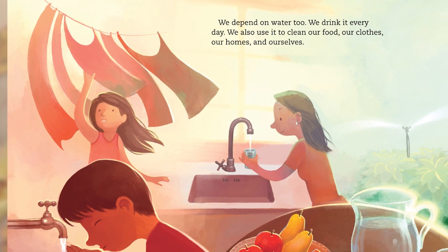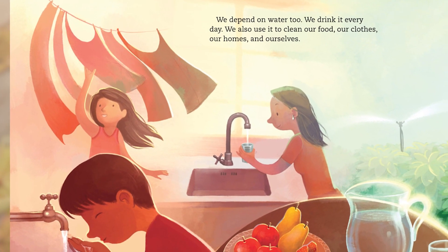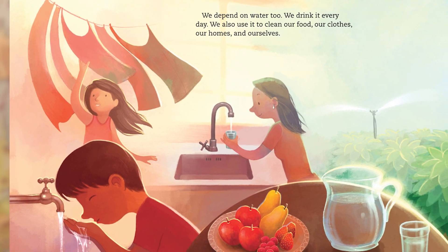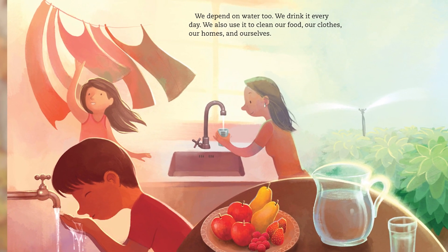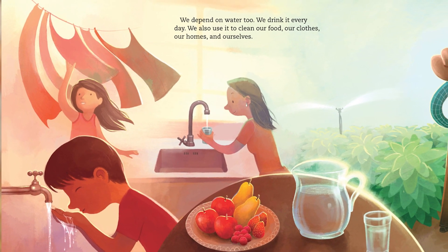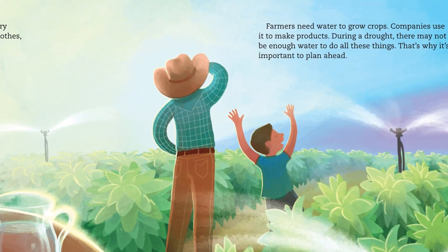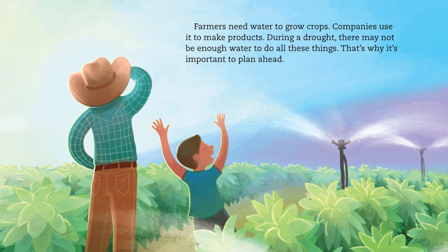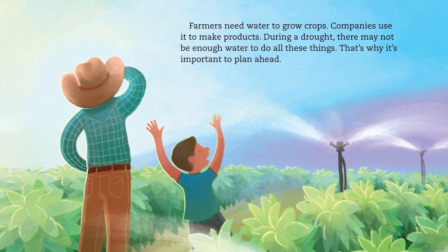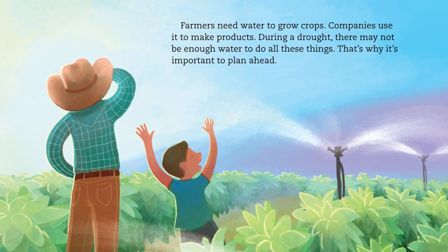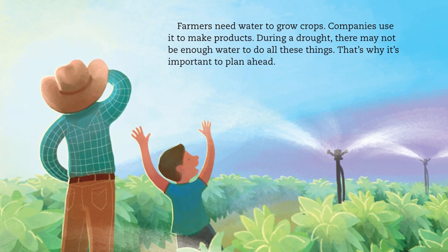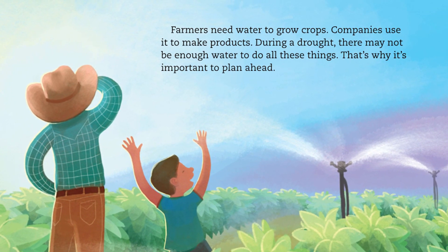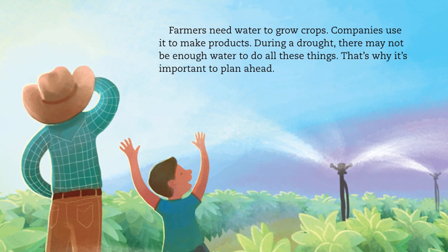We depend on water too. We drink it every day. We also use it to clean our food, our clothes, our homes and ourselves. Farmers need water to grow crops. Companies use it to make products. During a drought, there may not be enough water to do all these things. That's why it's important to plan ahead.